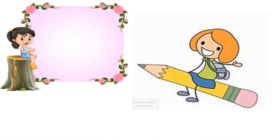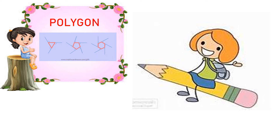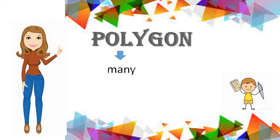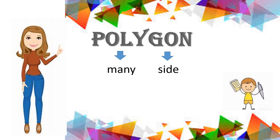Hi guys, today we will explore polygons. Let us know what is a polygon. Polygon comes from the Greek word 'poly' which means many and 'gon' which means side. So polygon means many sides.